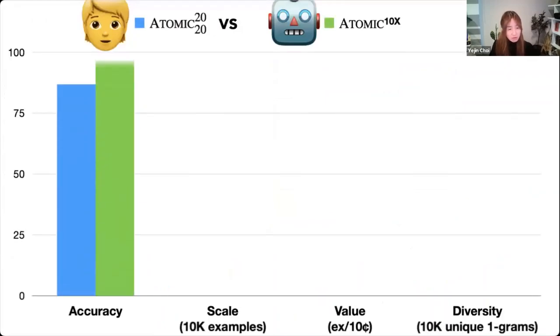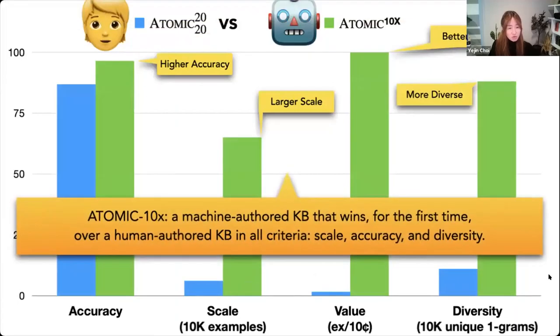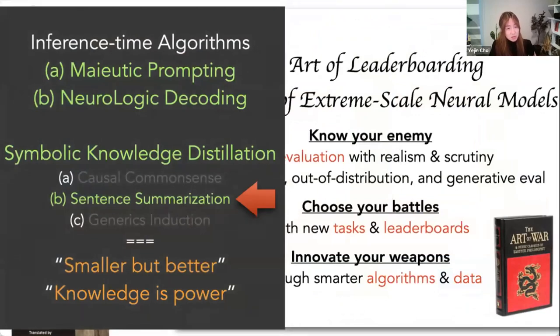So to summarize, we found that atomic 10x, written by AI, basically, can win over human written resource in all criteria for the first time. In terms of scale, accuracy, and diversity, everything is just better. So we measure diversity in different ways. And here, I just only show unique one gram count, but you can also look at the paper for other measures, but it's all around. AI is doing better than crowd workers. So that's the first part. But I wanted to also highlight that this symbolic knowledge distillation method works well for a variety of different tasks. So here, let me show you one example. But from my research group, we actually have almost a dozen different papers of this flavor. But let me just show you one example.